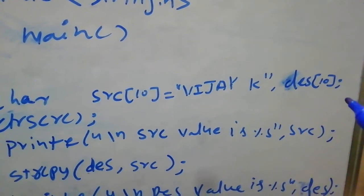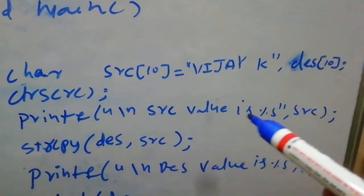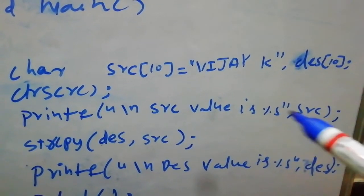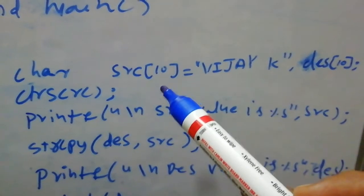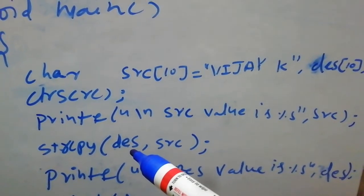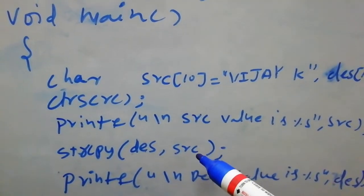First, I printed src value is percentage s src - the src value will be printed. Next, I use the function strcpy, open bracket, destination des, comma src.